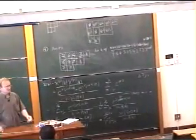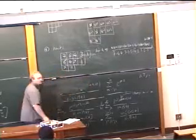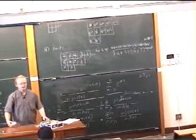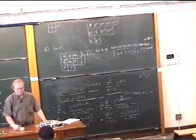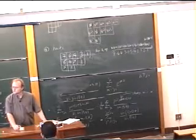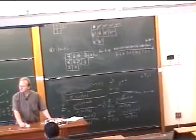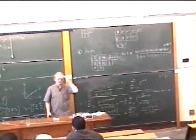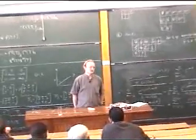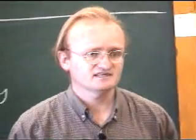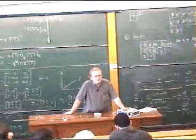Let's work out a couple of simple examples. There's a good book — Fulton and Harris, called Representation Theory — which has a nice discussion of Frobenius-Schur duality, and that's where you can get these rules from.